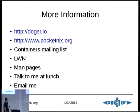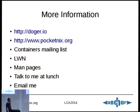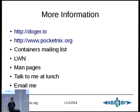For more information, I'm trying to document everything related to containers at dogger.io. I've also got some networking information on pocketnix.org — if you're interested in the network namespace I'd recommend going there. LWN is probably one of the best resources for this, along with the containers mailing list. There are man pages published there that were never actually put into the kernel man pages repository, and they're quite informative. If you've got any questions, either talk to me at lunch or email me.